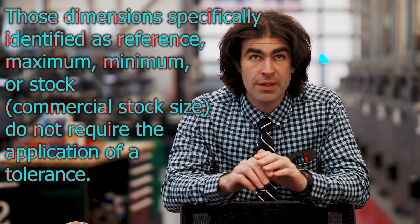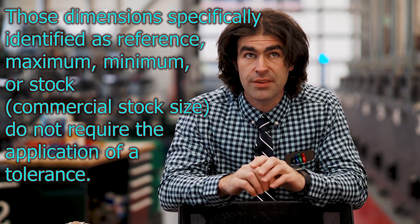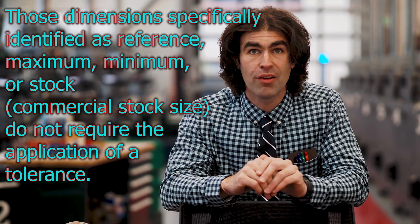So let's move on to sentence number six. So sentence number six: those dimensions specified as reference, maximum, minimum, or stock (commercial stock size), do not require the application of tolerance. So it appears that this just throws everything we just talked about out the window, but it really doesn't. So let me explain each of these. So a reference dimension is barely a dimension. Reference dimensions are a repeat of a dimension or is derived from other values shown on the drawing. It does not govern production or inspection.